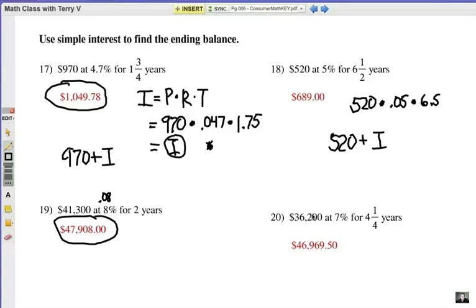Number 20, here's your principal, here's your rate, and four and a quarter years. What's that? 4.25. So multiply those three together. That will be the interest, then you add it on to that principal. Thank you so much for trying these problems. That's simple interest.